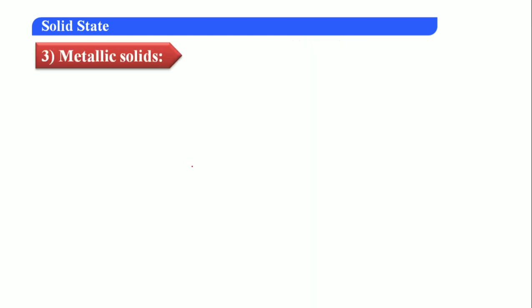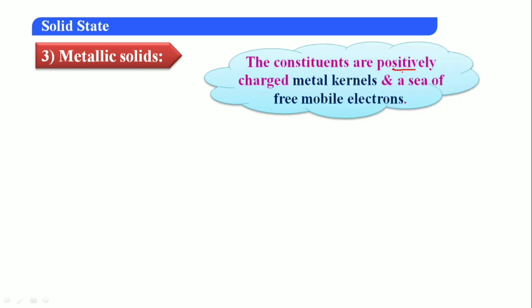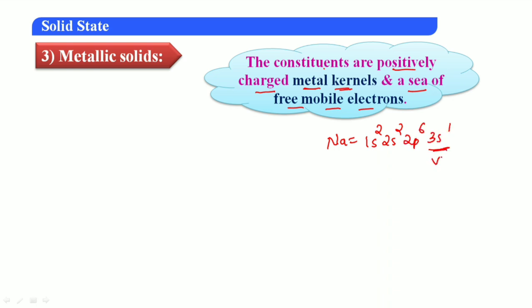Third type: metallic solids. The constituent particles are positively charged metal kernels, and a sea of free mobile electrons is present. The metal kernel refers to the nucleus plus all inner electrons, excluding the valence electron. For example, in sodium with configuration 1s², 2s², 2p⁶, 3s¹ — the 3s¹ is the free mobile valence electron, and the remaining part including the nucleus is called the kernel.